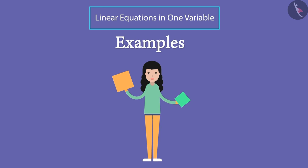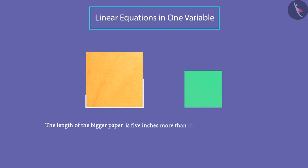Rani has been given two square chart papers. The length of the bigger paper is 5 inches more than that of the smaller paper. She has to find the length of the smaller paper.